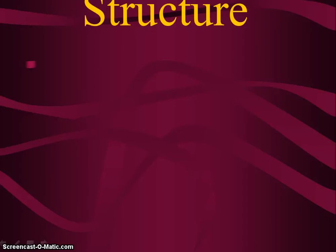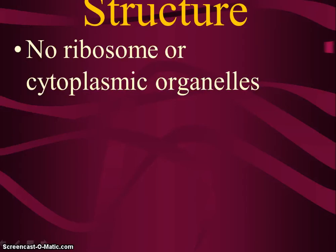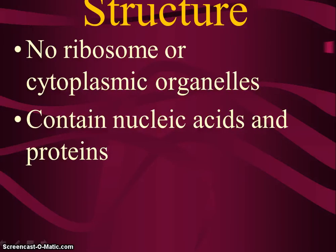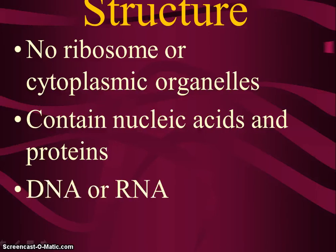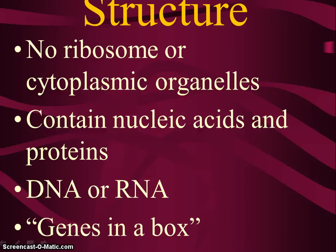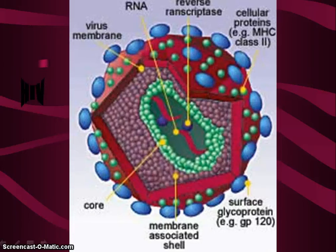Viruses have no ribosomes and no organelles — they only contain nucleic acids and proteins. If a virus contains RNA we call it a retrovirus; if it contains DNA we just call it a virus. We consider them 'genes in a box.' This is just showing you the HIV virus.